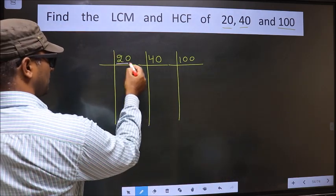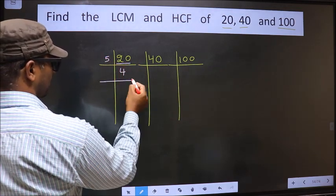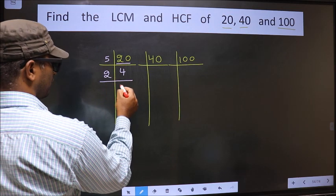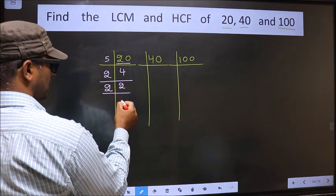Here first number is 20. 20 is 5, 4 is 20. 4 is 2, 2 is 4. Now we have 2. 2 is the prime number so 2, 1 is 2.